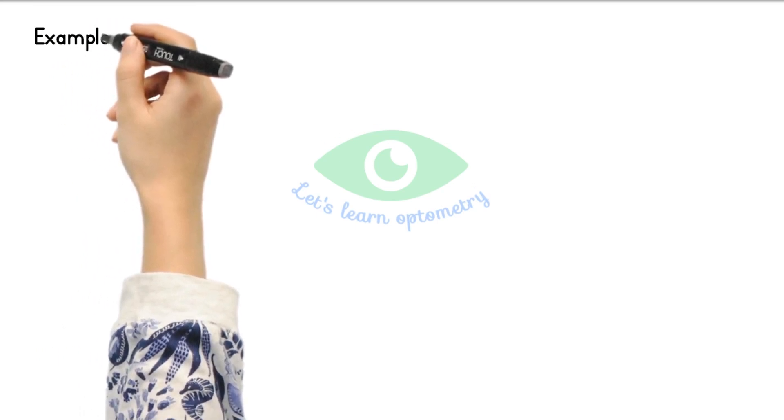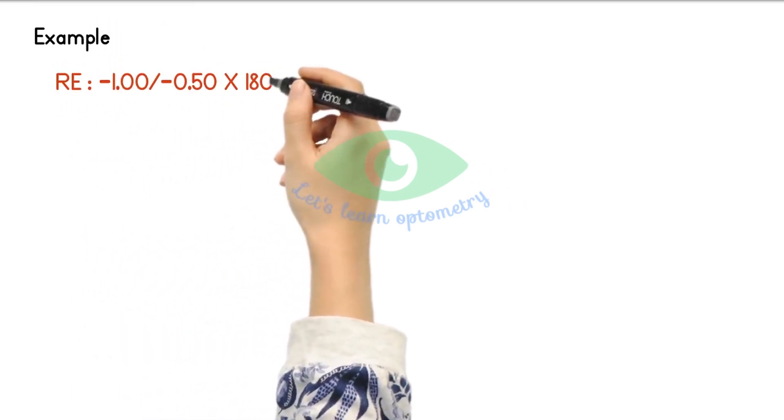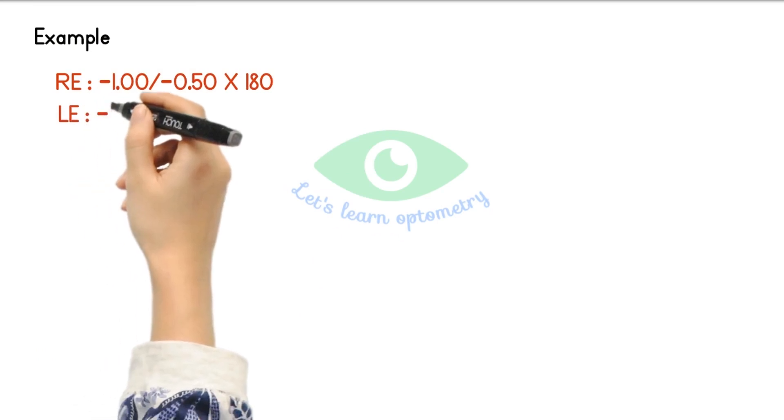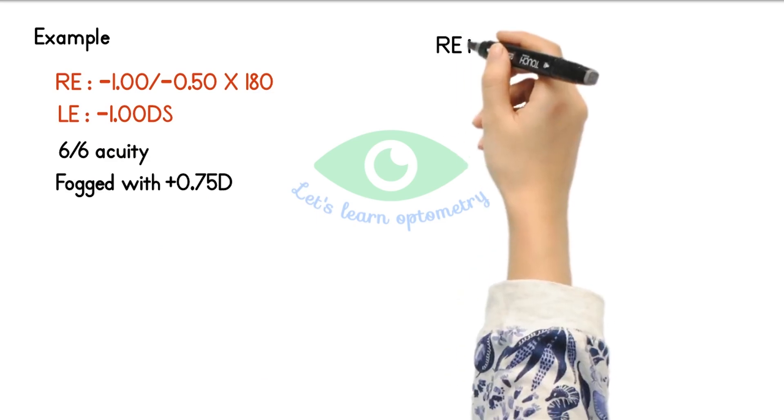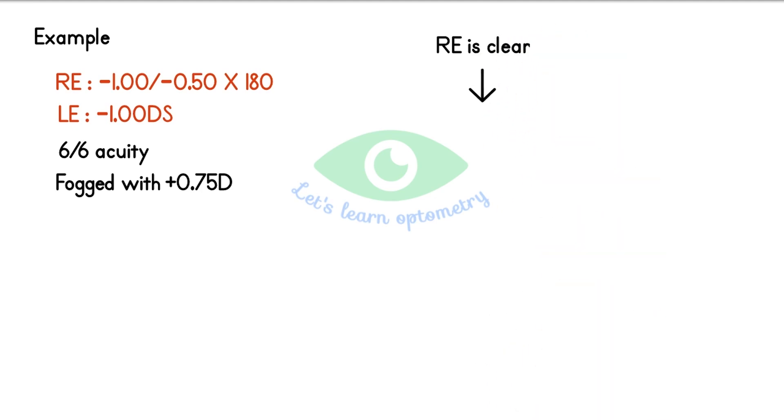Let's say an example. The prescription is right eye minus 1 with minus 0.5 at 180, left eye minus 1 spherical, visual acuity is 6/6 in both right and left eyes. So we fogged with plus 0.75 diopter and started our test. The patient first says right eye is clearer than the left eye. So we add 0.25 diopter in front of right eye.